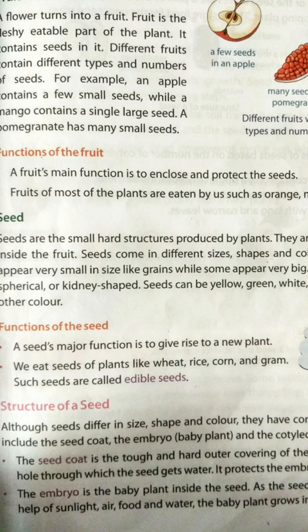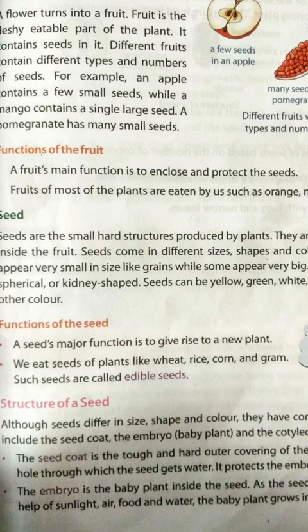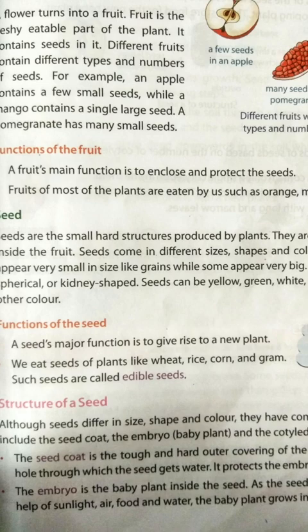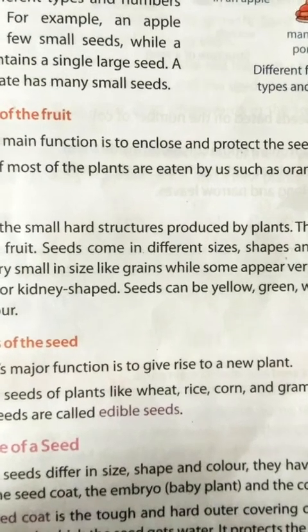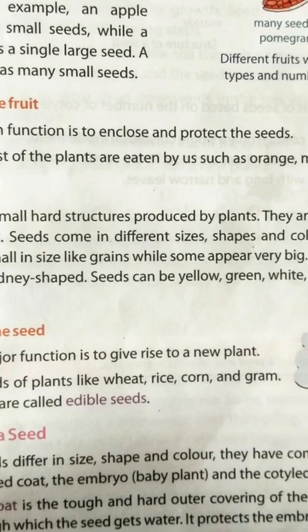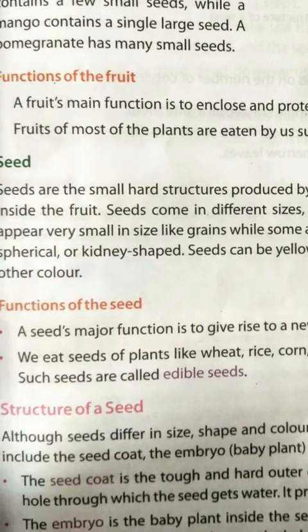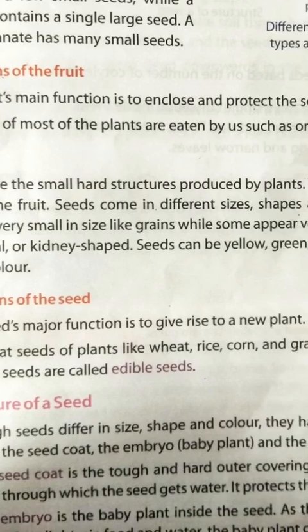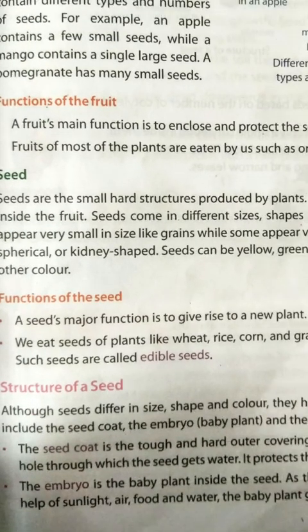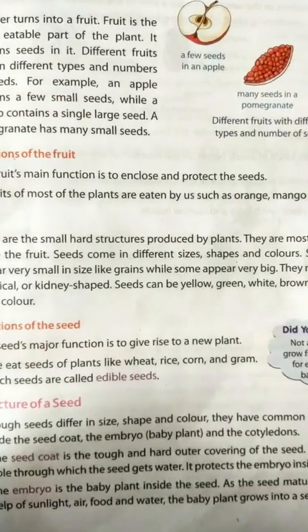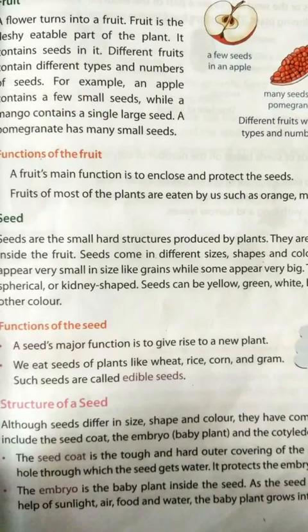We eat seeds of plants like wheat, rice, corn, and gram. Such seeds are called edible seeds — because we eat them, they are called edible seeds.